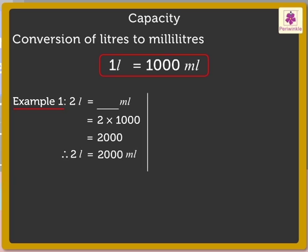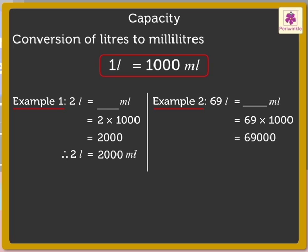Let's try one more example. Let's convert 69 liters into milliliters. So here, 69 into 1000 is equal to 69,000 milliliters. Thus, we get 69 liters is equal to 69,000 milliliters.